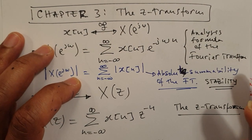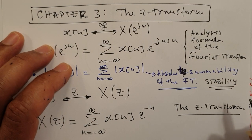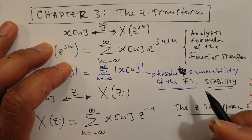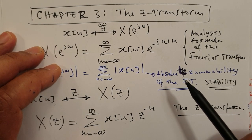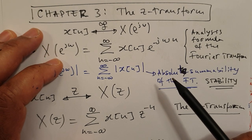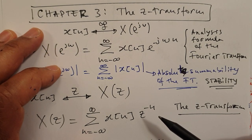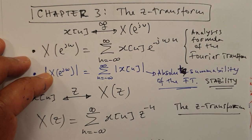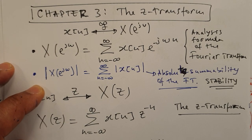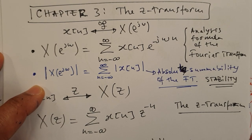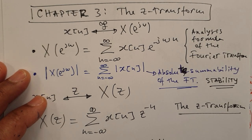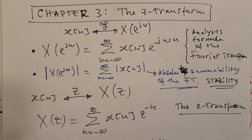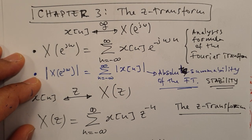Hello everyone, Antonio here. Welcome back to this brief summary of chapter 3, where we will be talking about the Z-Transform and its applications, how you can use the Z-Transform to analyze properties of systems like stability, which we have seen in connection with the Fourier transform, and also causality.